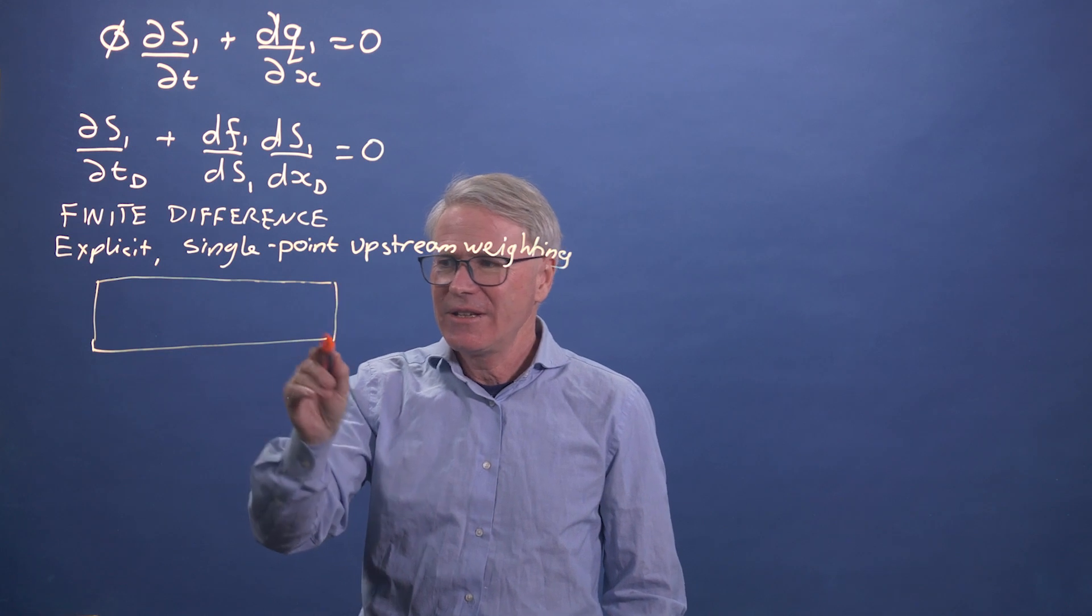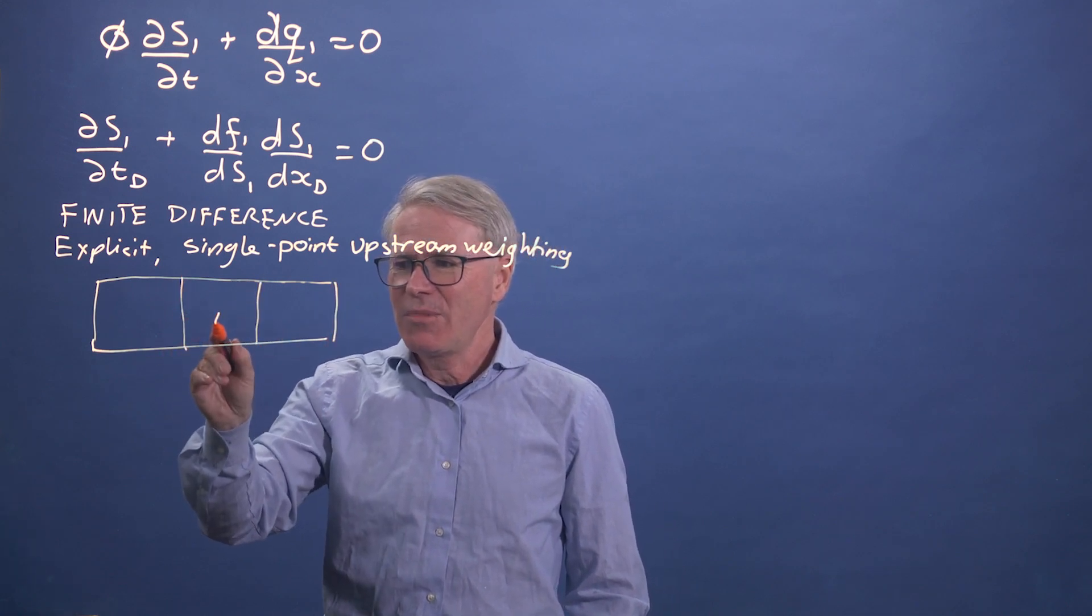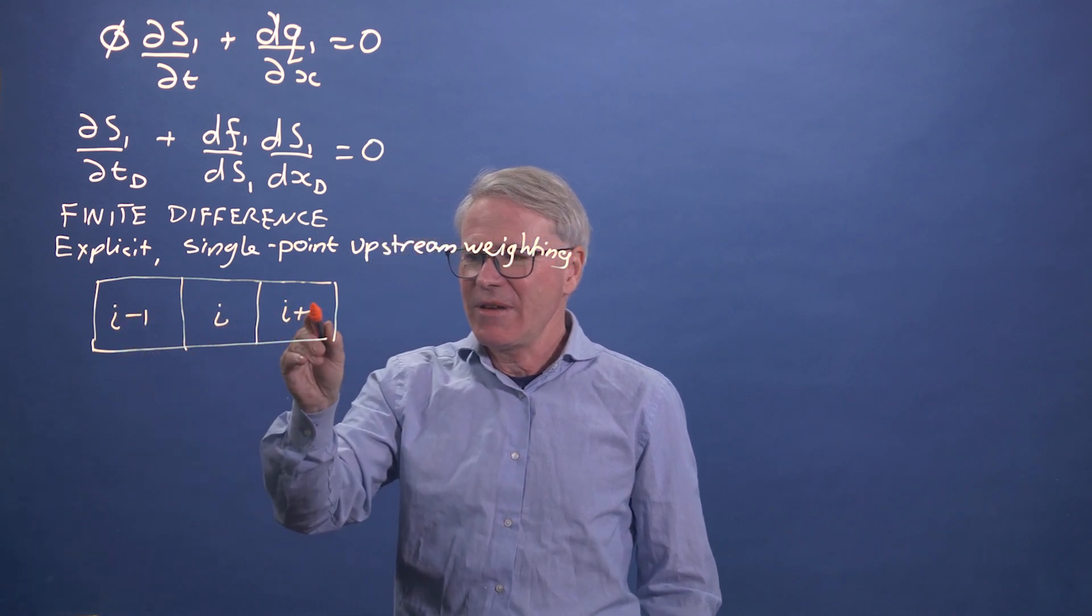So imagine I've got a grid and I'm just going to consider three grid blocks. This is grid block i. This is grid block i minus one. And this is grid block i plus one.